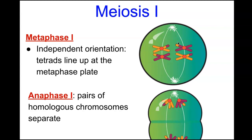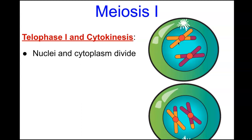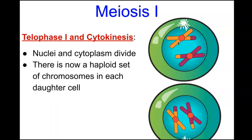During prophase, spindle formation and nuclear envelope disappearance also take place. In anaphase I, the sister chromatids remain attached — it is only the homologous chromosomes that separate. In telophase I and cytokinesis, the nuclei and cytoplasm divide, and there is now a haploid set of chromosomes in each daughter cell.